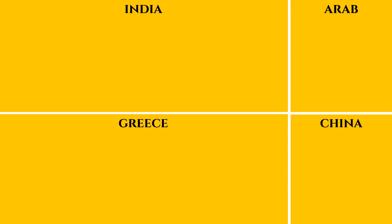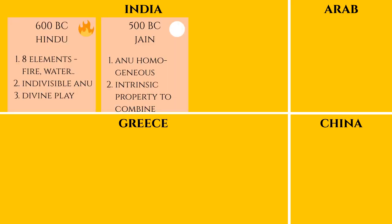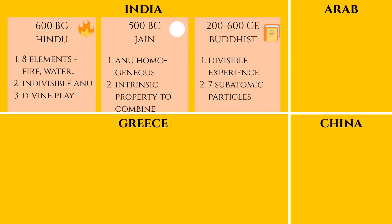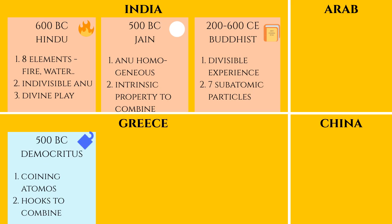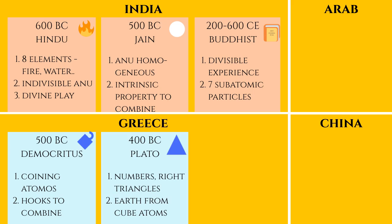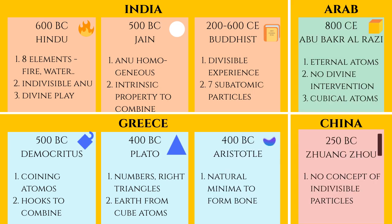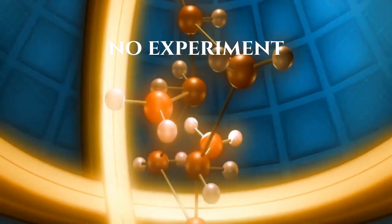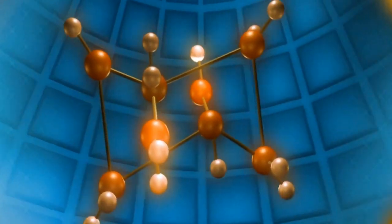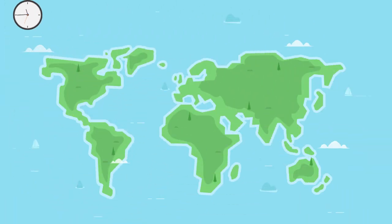In our last video, we discussed the evolution of atoms across centuries. We started around 600 BC with Indian philosophies of Hindu, Jain and Buddhist religions, which differed widely in what forms the fundamental unit — is it matter or human experience itself? Around 500 BC, the Greek philosopher Democritus coined the term atomos and proposed a hook-based mechanism for atom aggregation. Plato discarded his idea and proposed that numbers and shapes are the building blocks of the universe. While all these philosophies agreed on fundamental indivisible particles, the difference was in the type of atoms and the question of the role of divinity. There were no experimentations to validate these hypotheses, and the understanding of atoms remained unchanged till the 1700s.